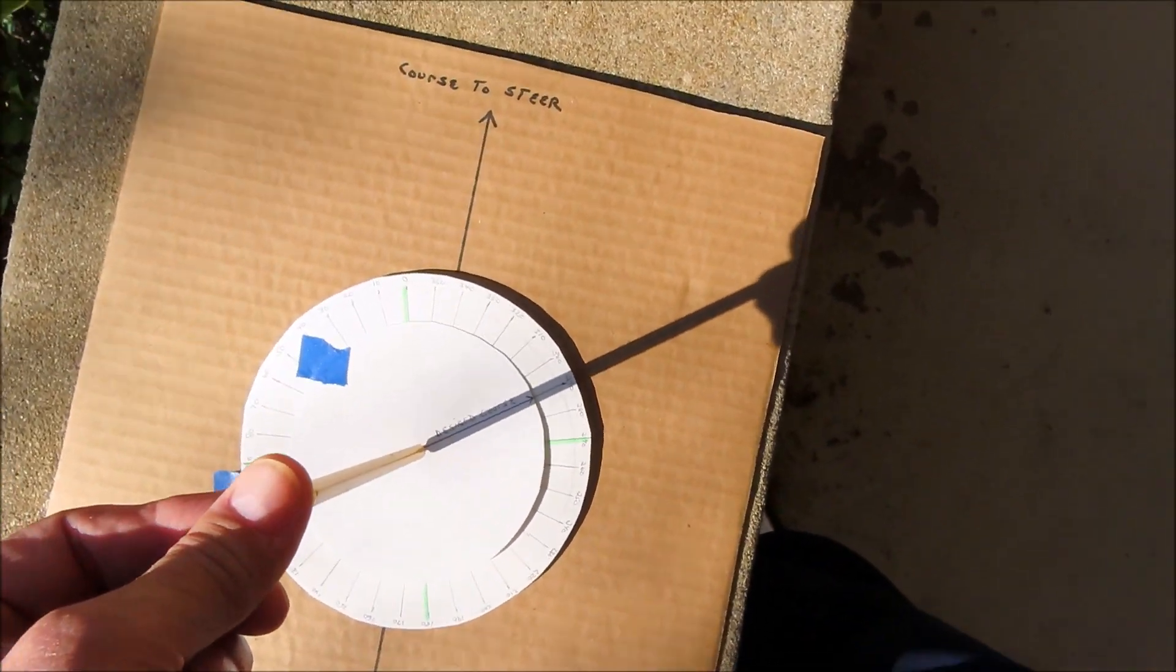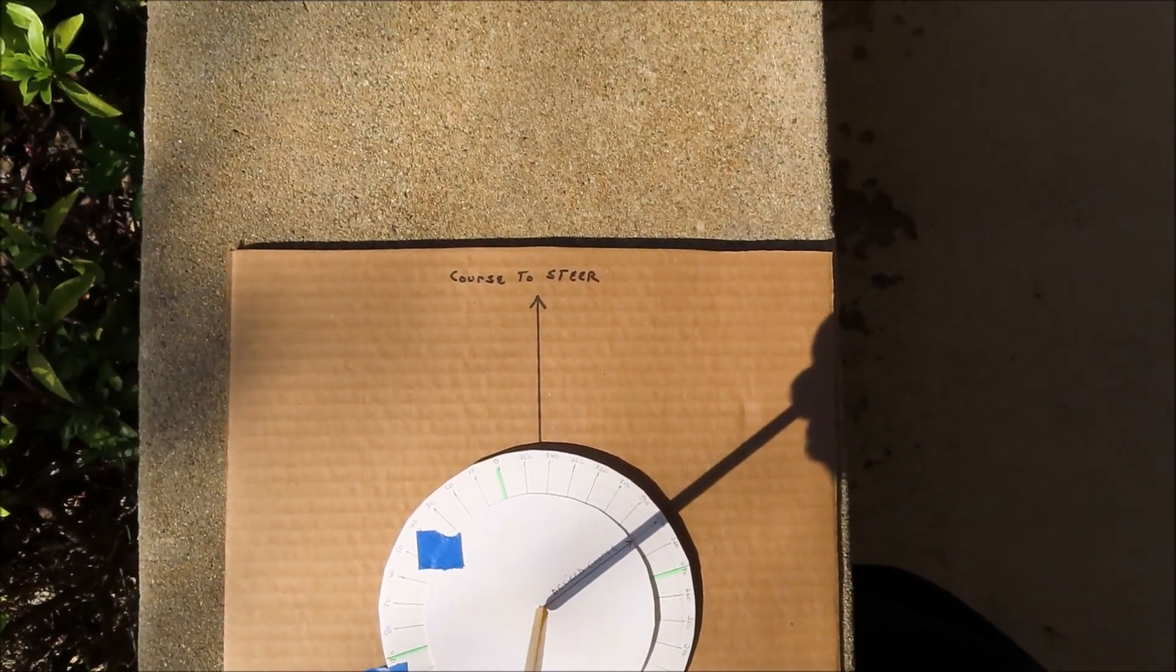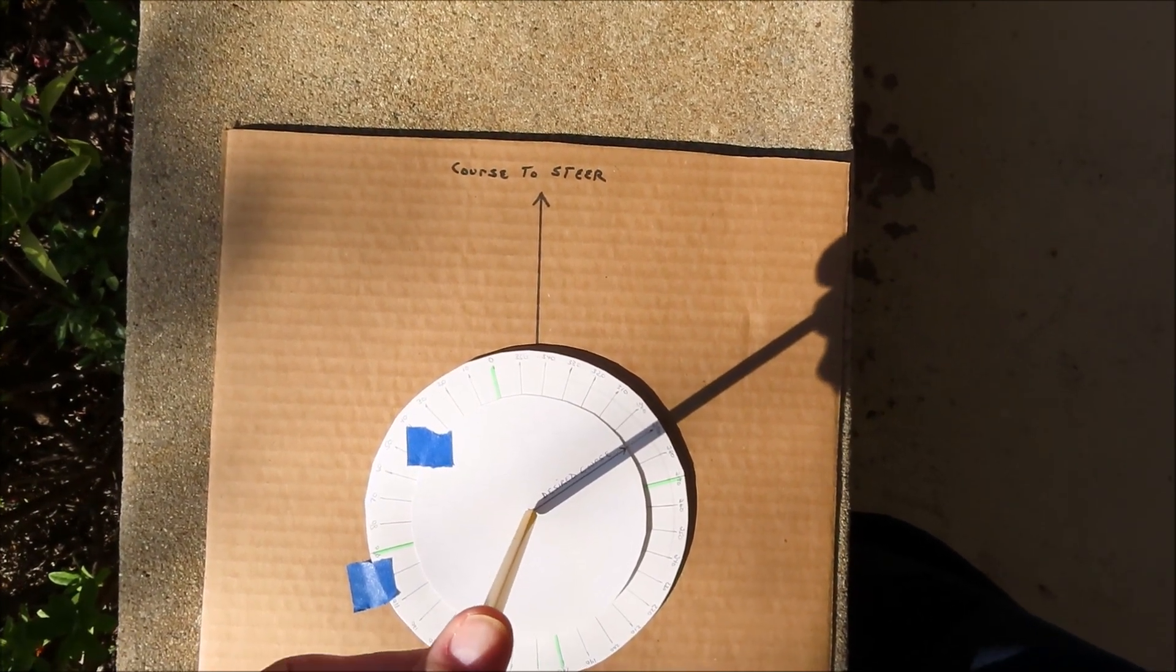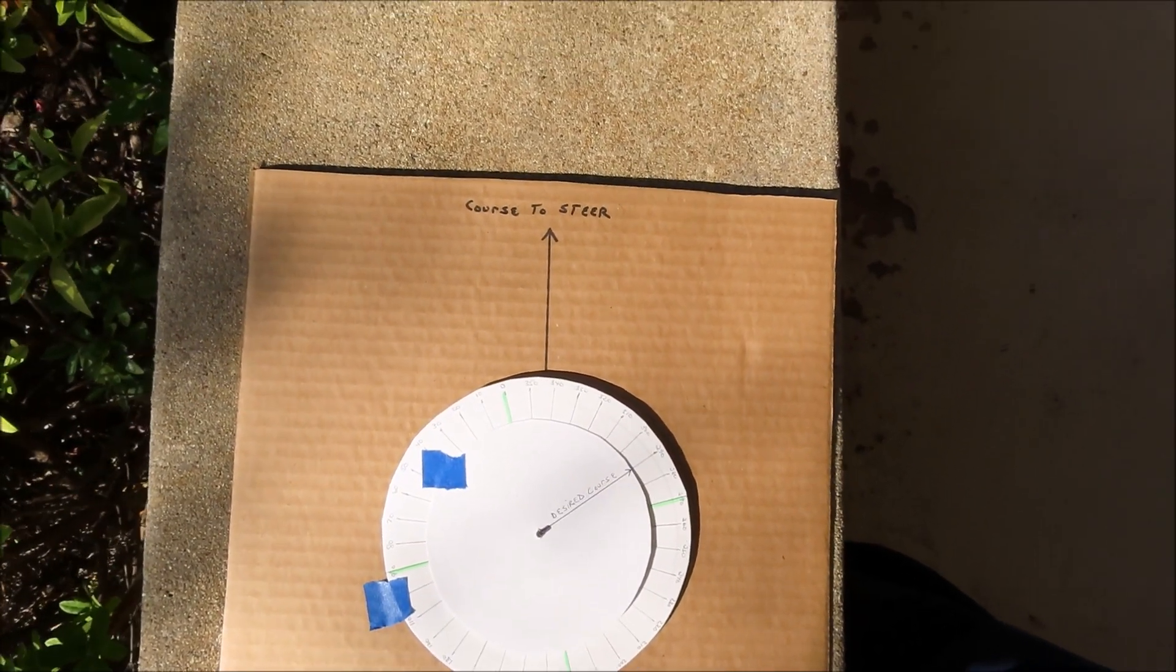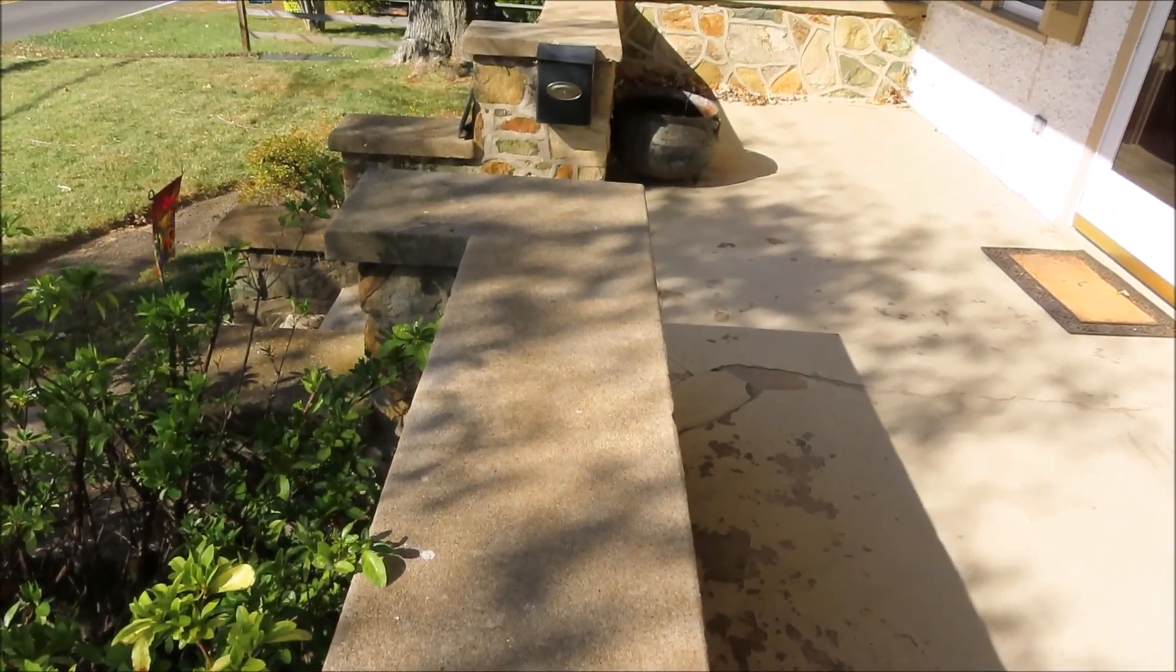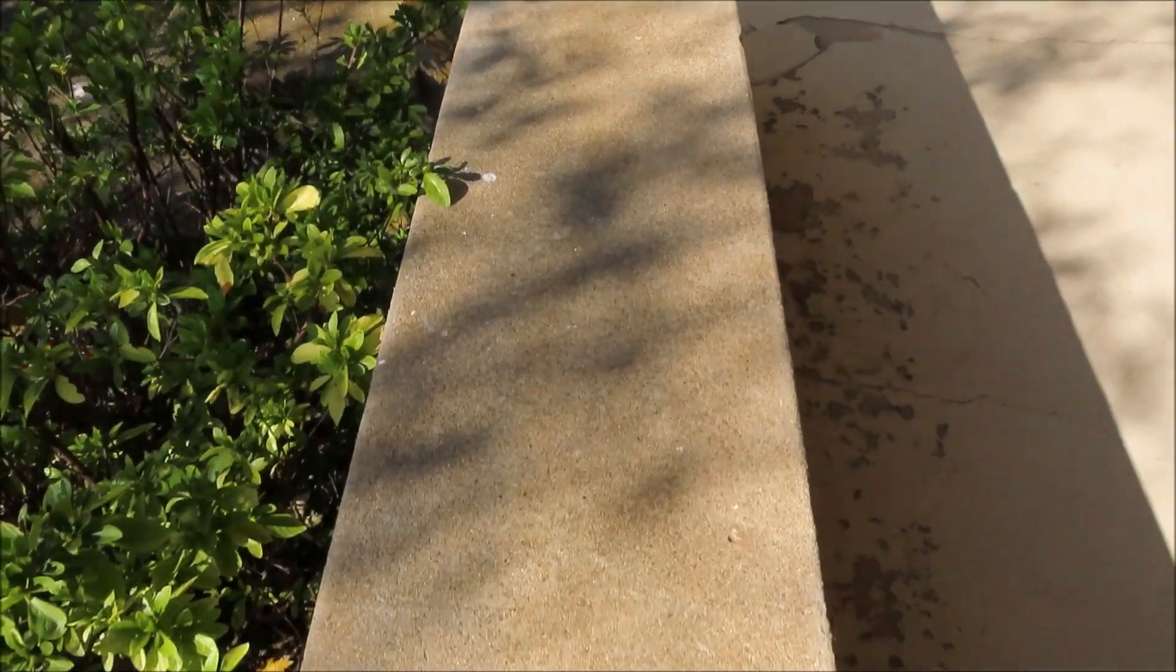And so that arrow up there that says course to steer, that's the direction that we would drive in. And I picked 290 because that's the true bearing of this concrete shelf that I have here.